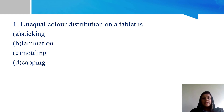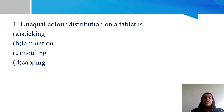First question: unequal color distribution on a tablet. Options: A - sticking, B - lamination, C - mottling, and D - capping. Tablet is a solid dosage form containing medications with excipients.